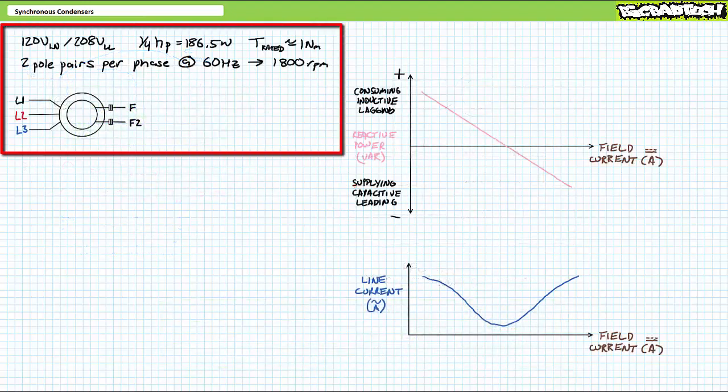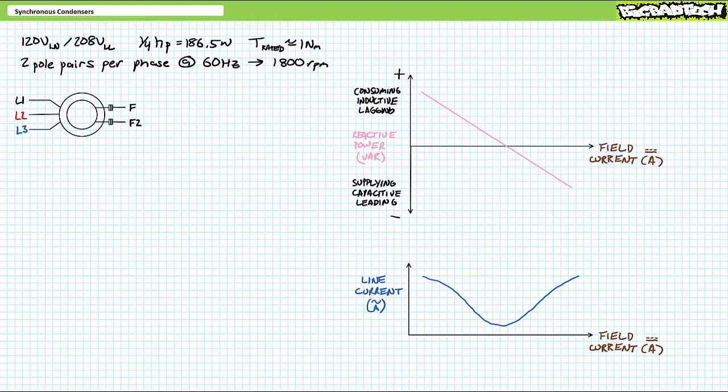For the purposes of today's lecture, we'll be making use of a rugged but admittedly inefficient quarter-horsepower rated electrically excited synchronous motor designed to operate with 120 volts line-to-neutral, 208 volts line-to-line, light industrial three-phase AC in Y configuration. This is the same motor we used in the electrically excited synchronous motors lecture.